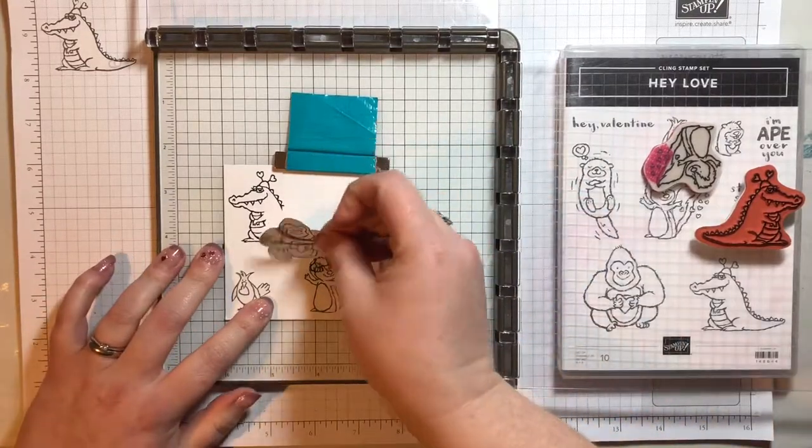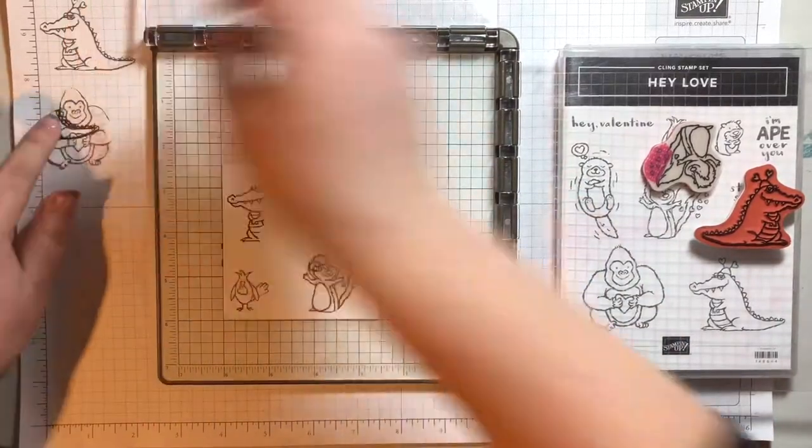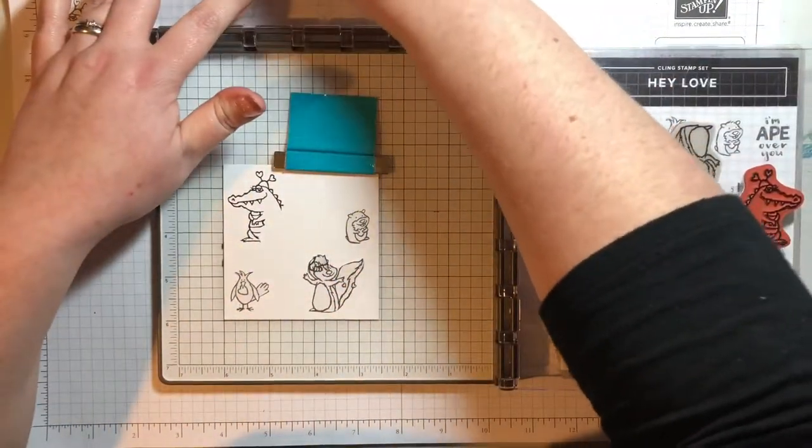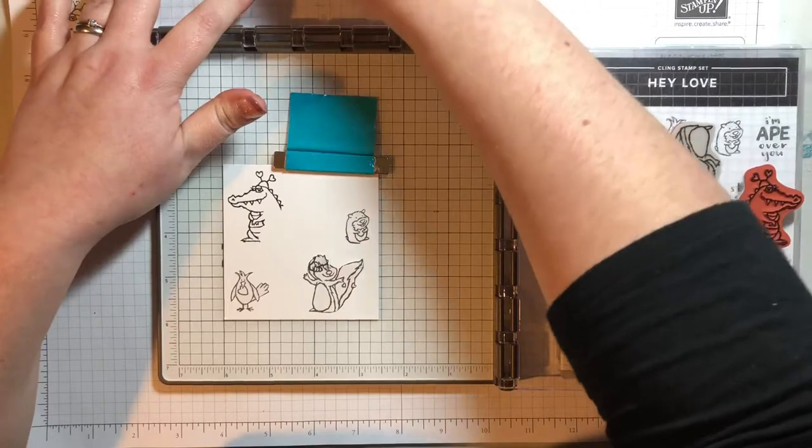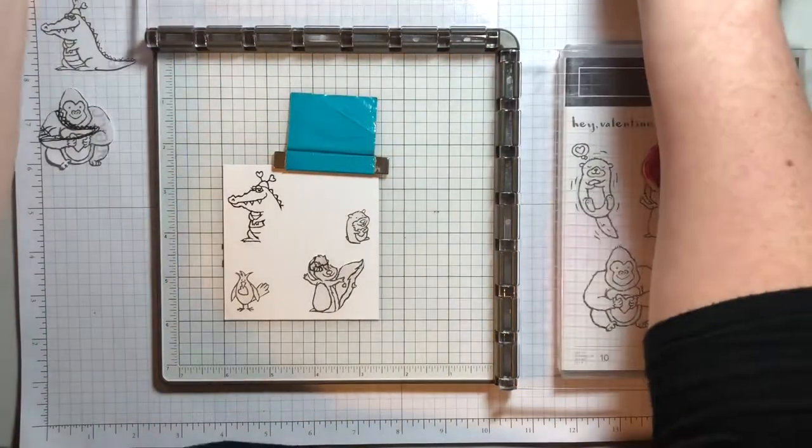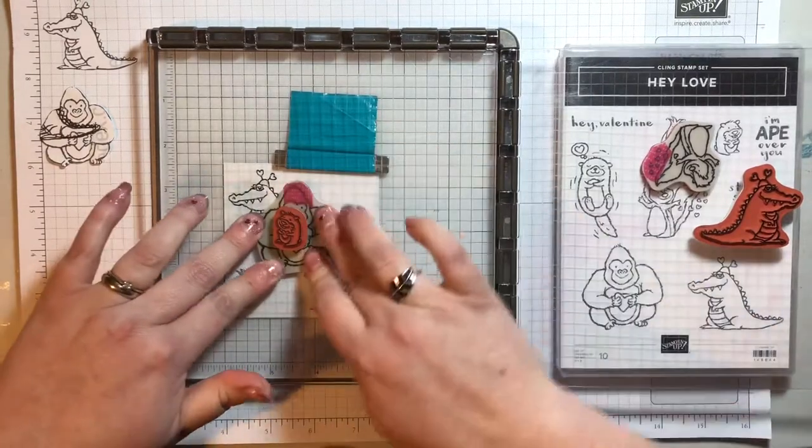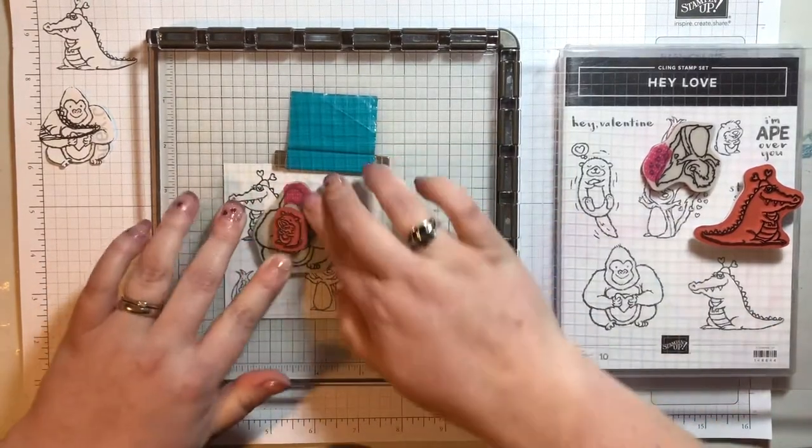Now we can pull the ape masking off. Set it on the side. Set it on the side and ink and stamp the ape.